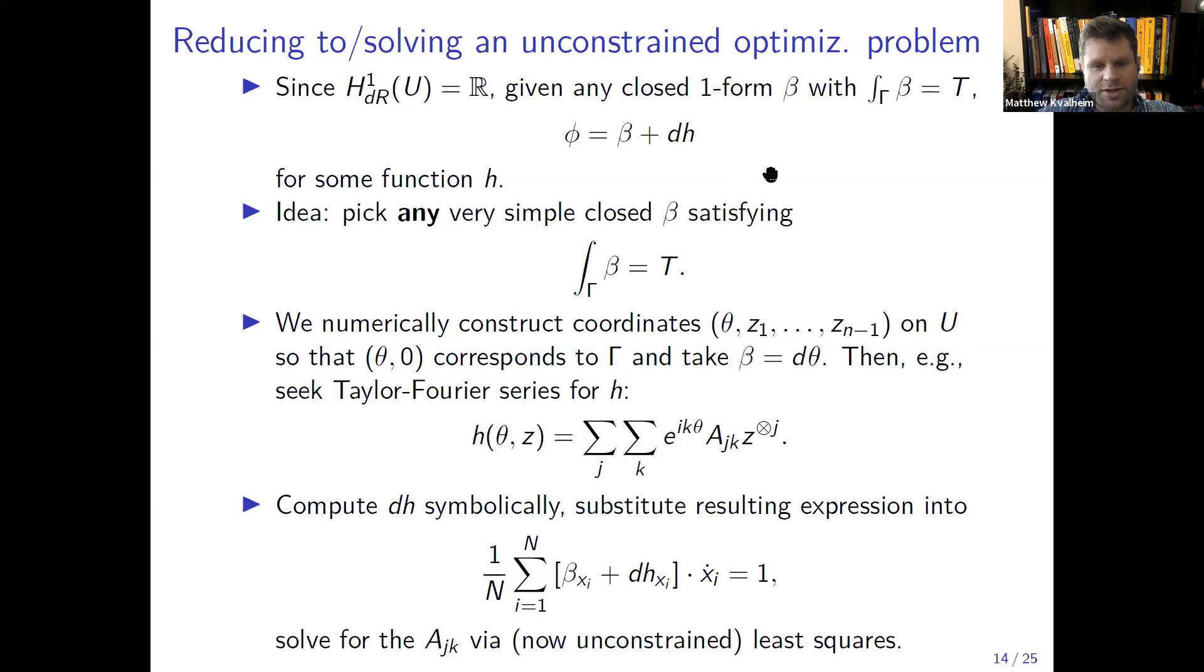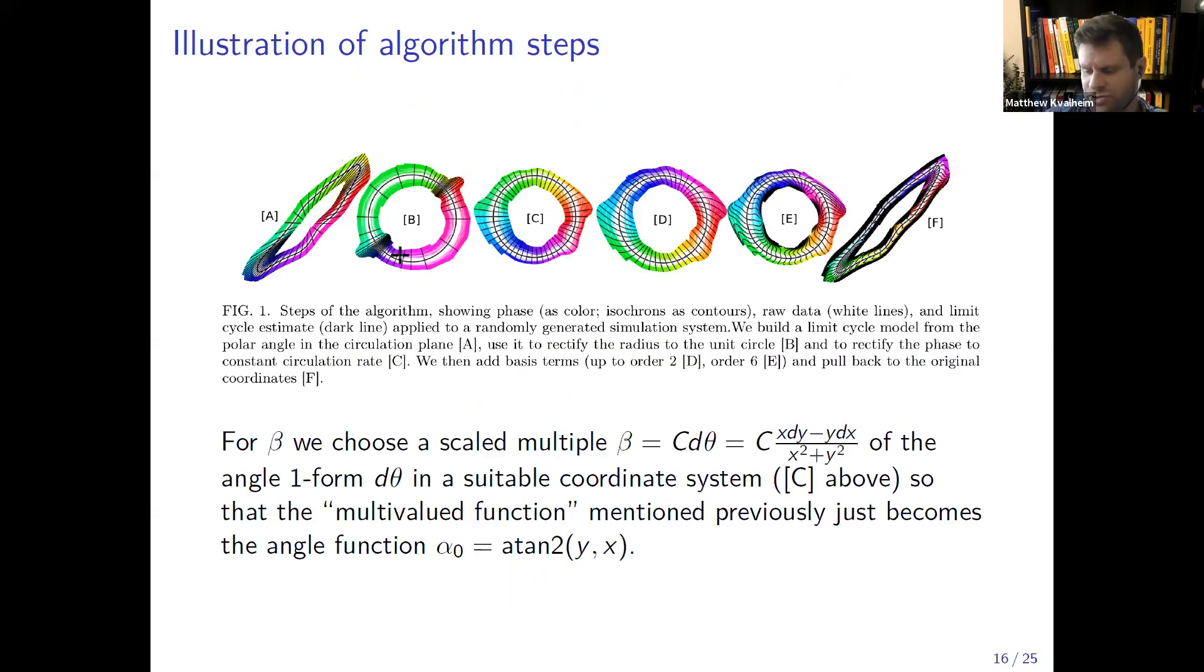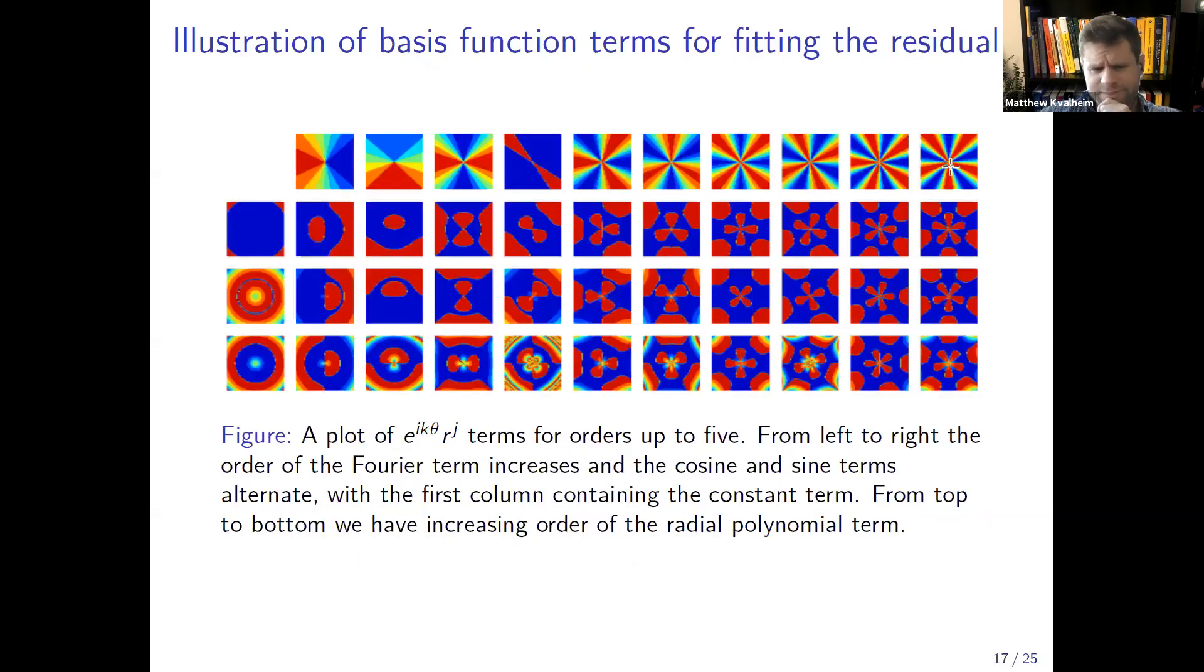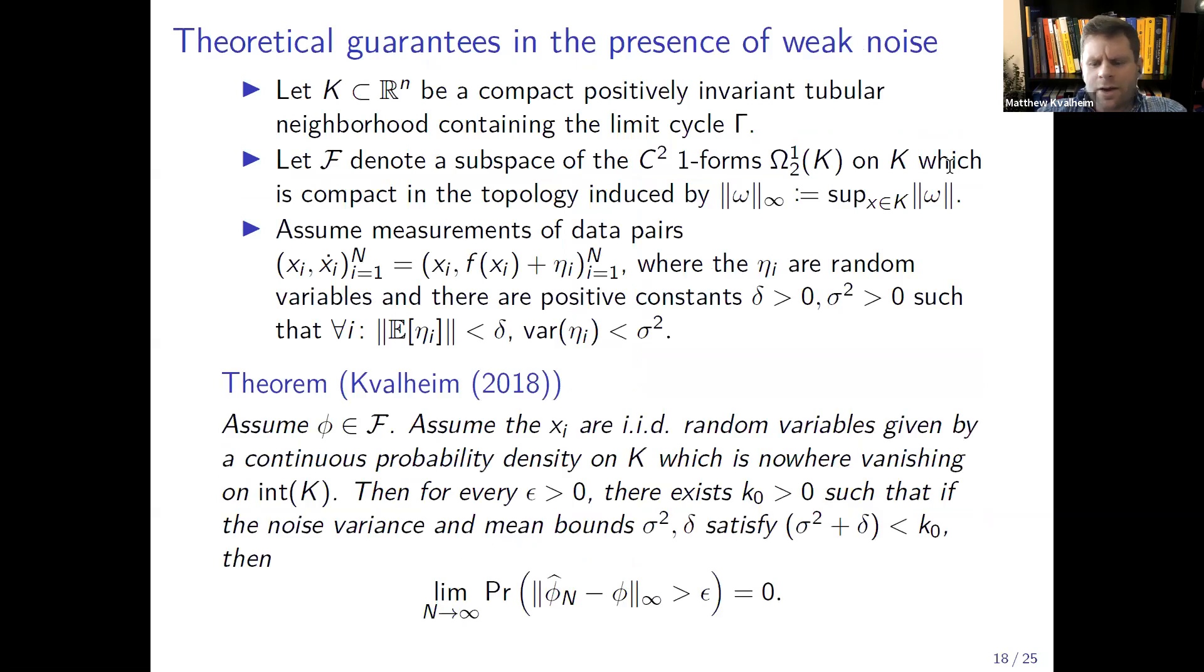We can compute dh symbolically and plug it in and all the ajks still kind of stay in there in a clean form. Now you just solve for the ajks via an unconstrained least squares problem. So by doing this topology we could turn our constrained optimization problem into an unconstrained problem and solve it with least squares. This picture shows the algorithm steps: we change coordinates, then we rescale. In this rescaled space we take β to be the angle one form, and then here we're just fitting the residual term. Here's results up to order two, up to order six, and then we push everything back into the original coordinates at the end. This is just illustrating what all of the basis function terms for fitting the residual look like.